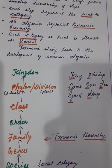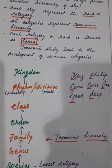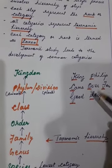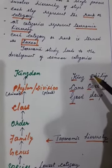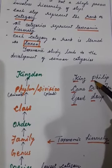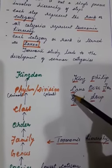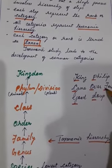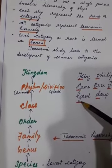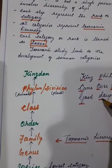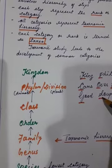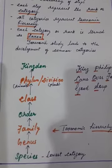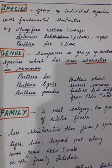To help you remember the taxonomic hierarchy easily, use this sentence: 'King Philip Came Over For Good Soup.' K for kingdom, P for phylum (division for plants), C for class, O for order, F for family, G for genus, S for species — the lowest rank in taxonomic hierarchy.